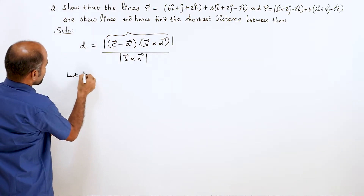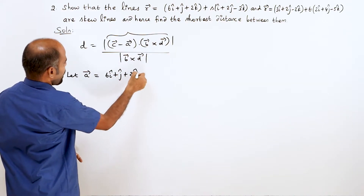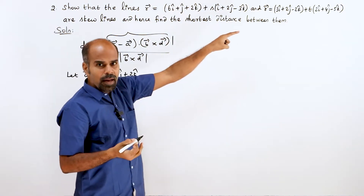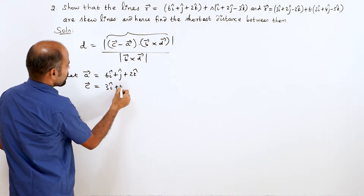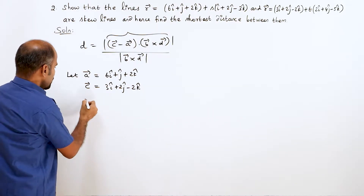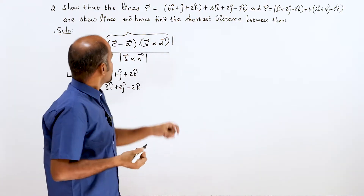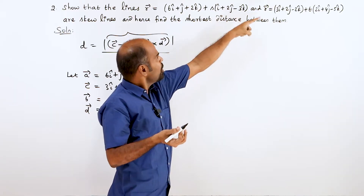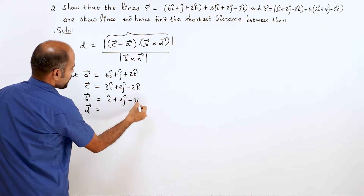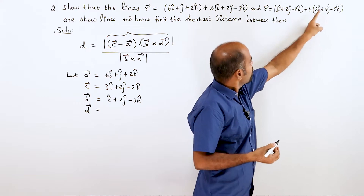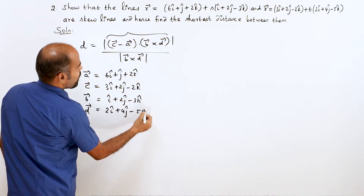Let a vector equal to the position vector of a point on the first line: 6i cap plus j cap plus 2k cap. c vector is the position vector of a point on the other line: 3i cap plus 2j cap minus 2k cap. For b vector and d vector, these are the parallel vectors to the respective lines — the direction vectors given by the parameter coefficients. b vector is 1, 2, minus 3, so i cap plus 2j cap minus 3k cap. d vector is 2, 4, minus 5, so 2i cap plus 4j cap minus 5k cap.